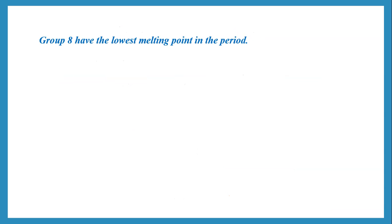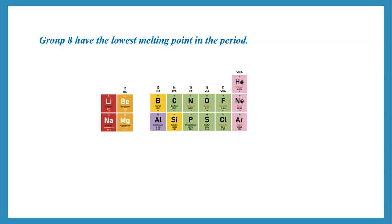If you are looking at any period, the element in group 8 is the one that has the lowest melting point. So from lithium to beryllium to neon, neon is the one with the lowest melting point. From sodium to magnesium to argon, argon is the one with the lowest melting point in the period.